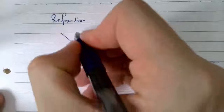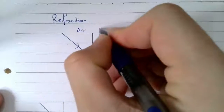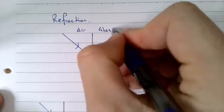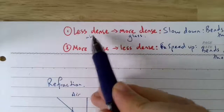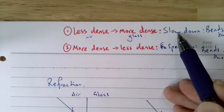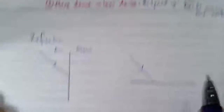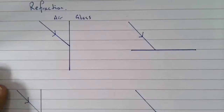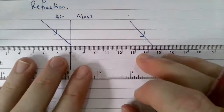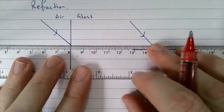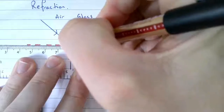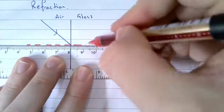For the first example, we're going from air to glass — less dense to more dense — so the light is going to slow down and bend towards the normal. The first thing to do is draw the normal, which is always perpendicular to the boundary between the two mediums.